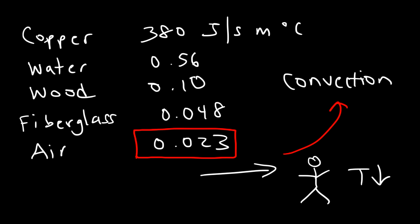Air is only a good insulator when it's not moving. When it moves, it carries heat away — even a small breeze on a hot day can make you feel cooler. This is also why in winter you wear layers of clothing. Between the shirts you trap still air molecules, and because that air isn't moving, it serves as a good insulator — in fact, a better insulator than the clothing itself.